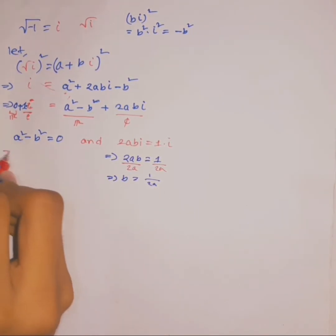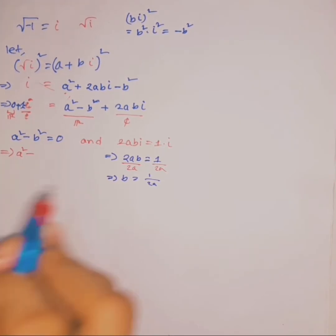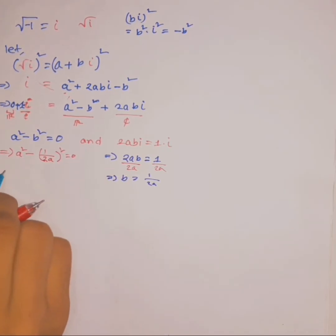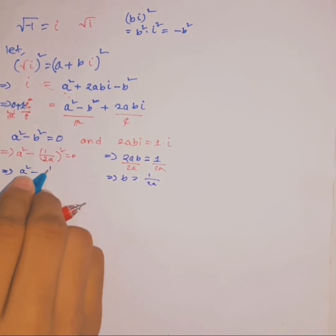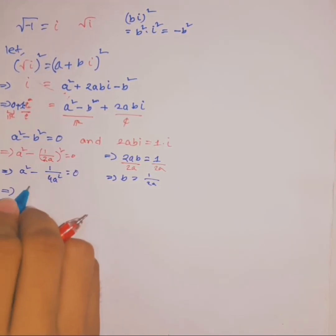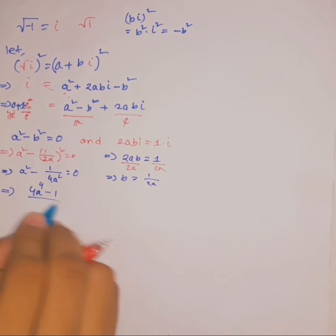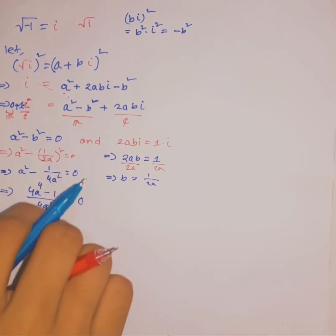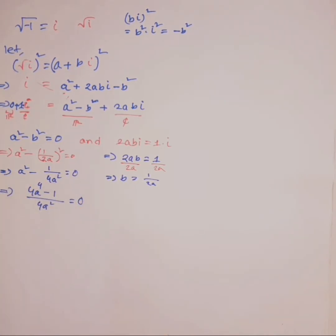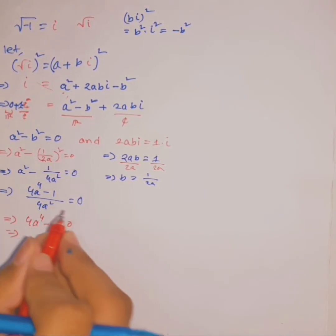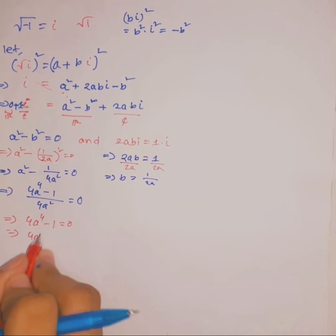Plug the value of b into a squared minus b squared equals 0. So a squared minus (1 over 2a) squared equals 0, which gives a squared minus 1 over 4a squared equals 0. This simplifies to (4a to the 4th minus 1) over 4a squared equals 0. A fraction equals zero only when the numerator equals zero, so 4a to the 4th minus 1 equals 0, giving 4a to the 4th equals 1.